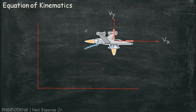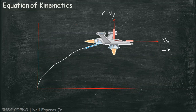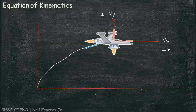The x-engine accelerates the spacecraft in the x-direction and causes a change in the x-component of the velocity. Likewise, the y-engine causes a change in the y-component. It is important to realize that the x part of the motion occurs exactly as it would if the y part didn't exist at all, and vice versa. In other words, the x and y motions are independent of each other.